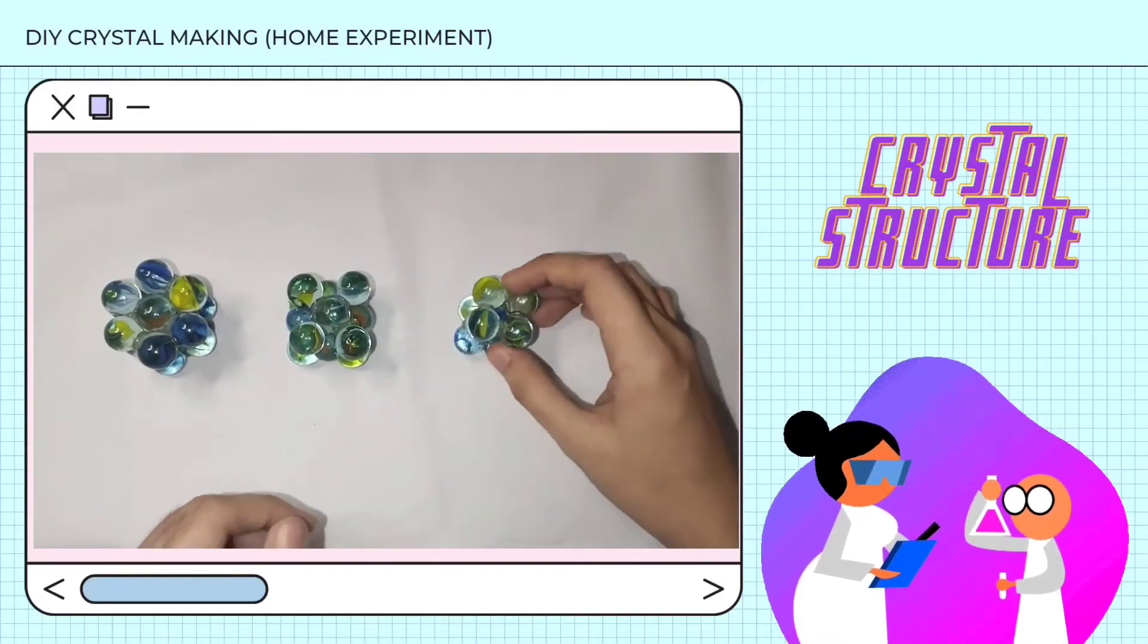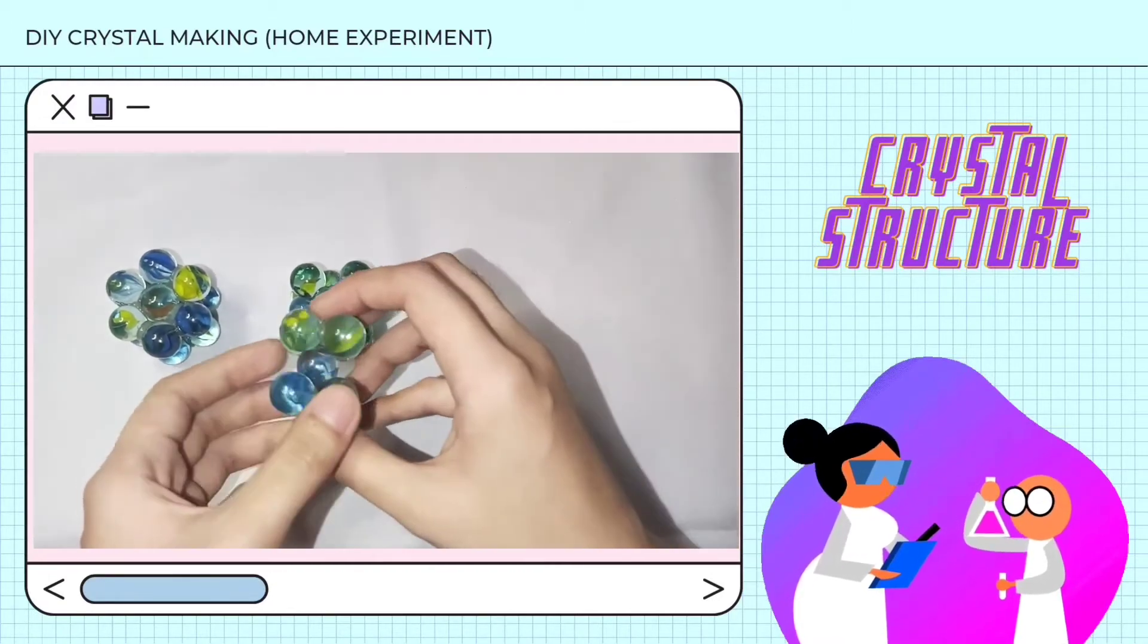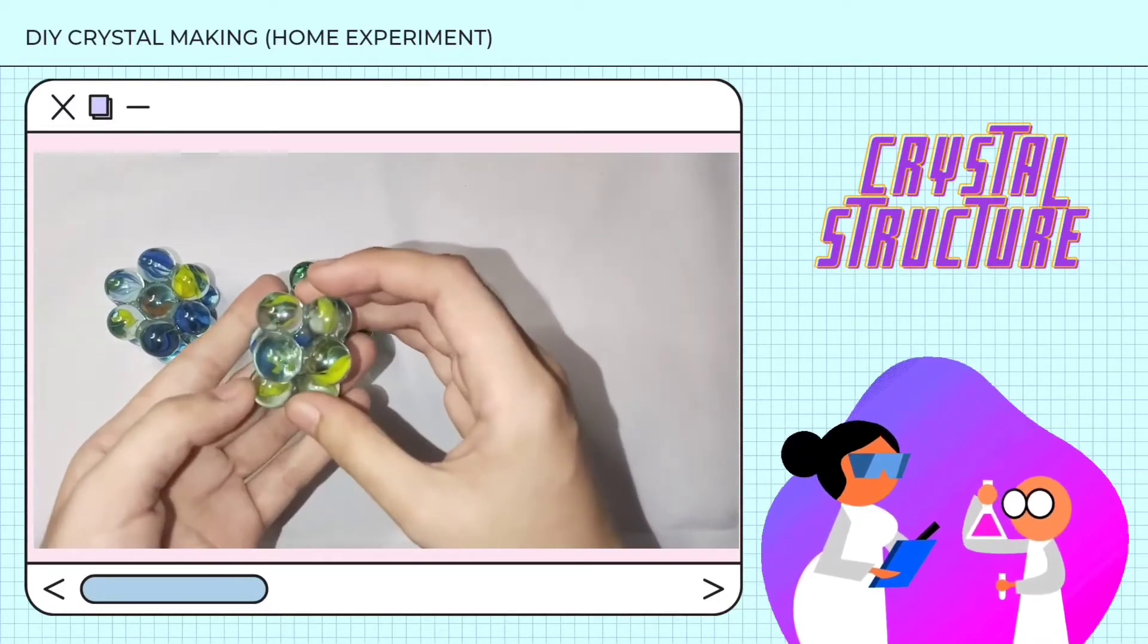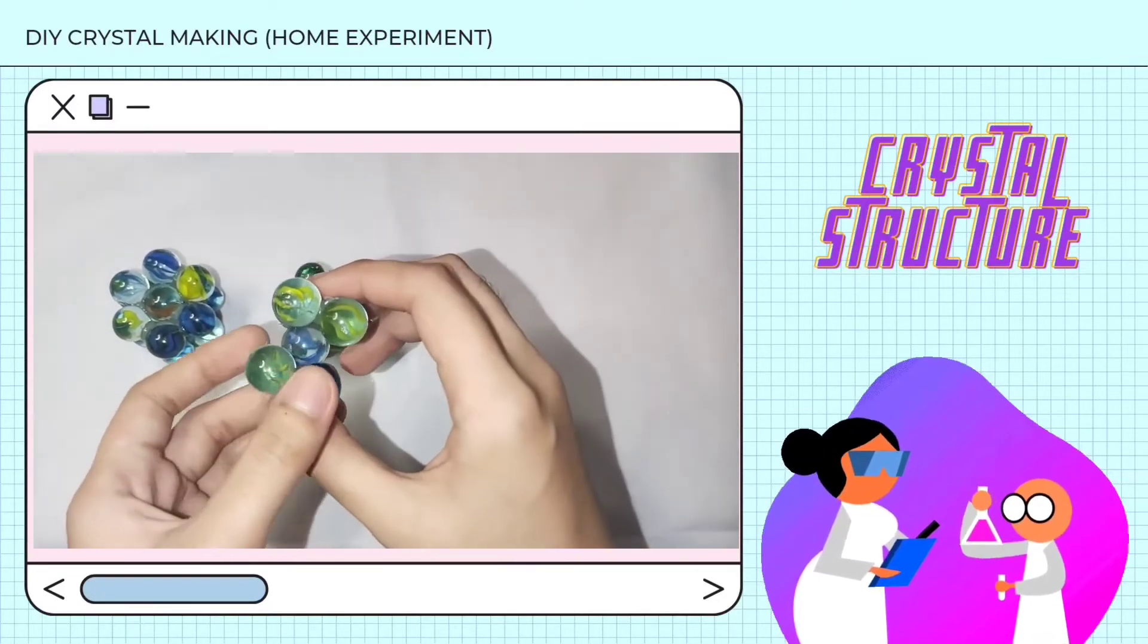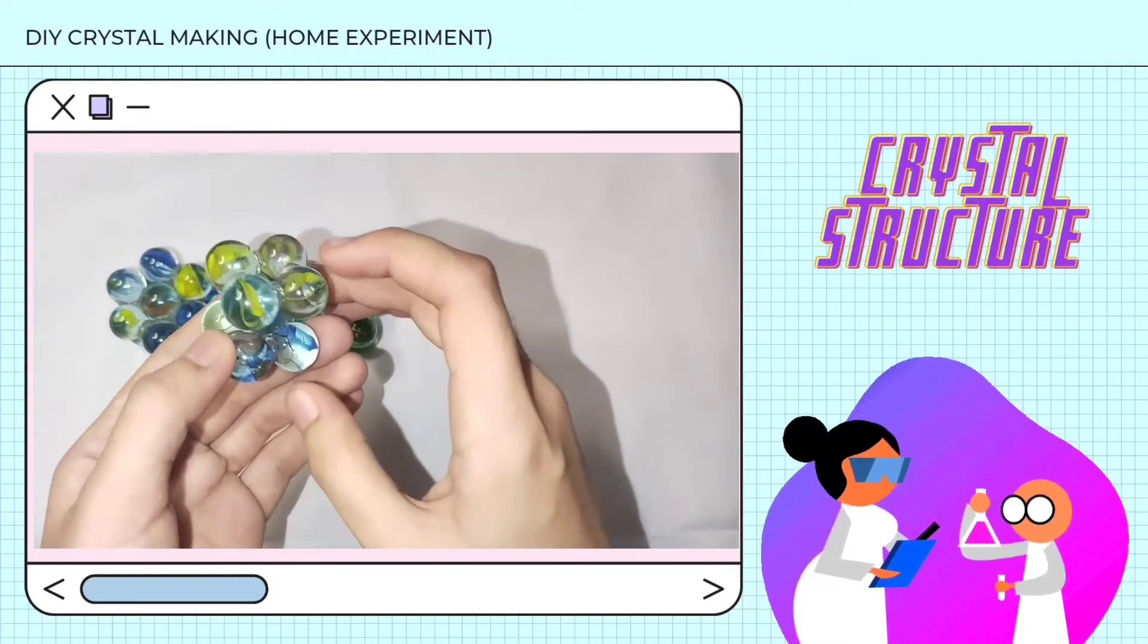The last one is the type of atom arrangement found in nature, which is the BCC. It is made up of atoms packing a cube with one atom in the center and one in each corner sharing an atom.